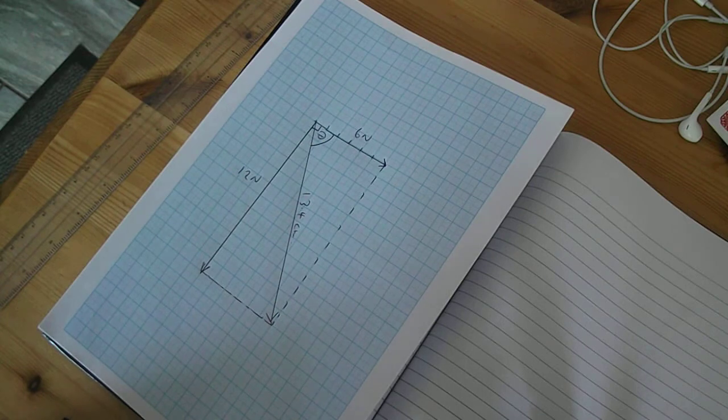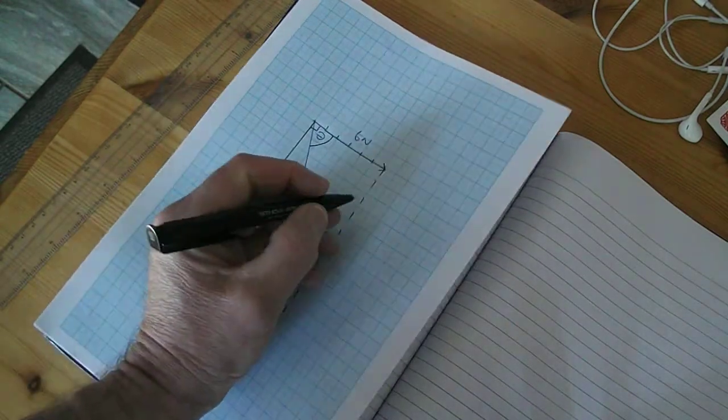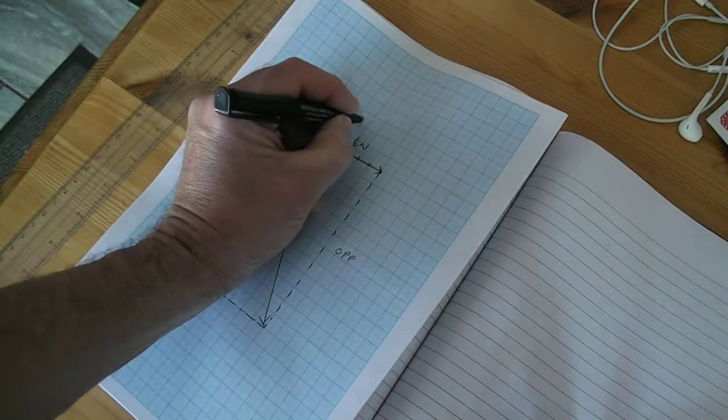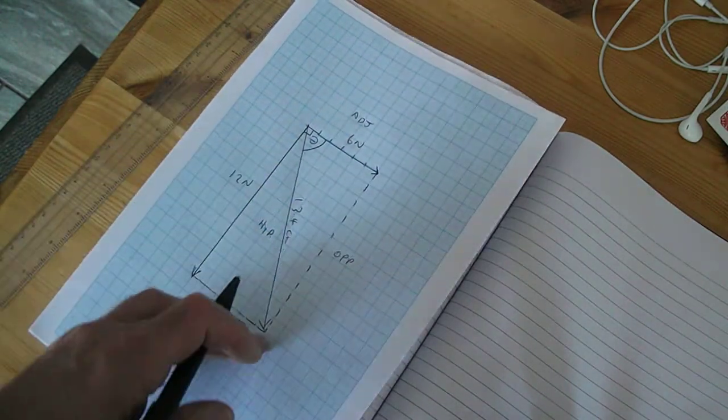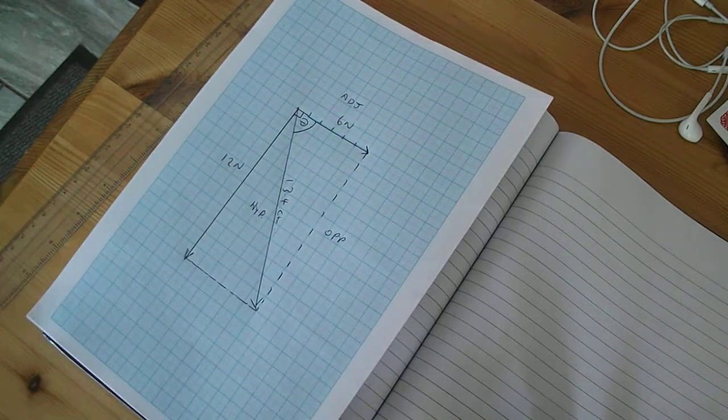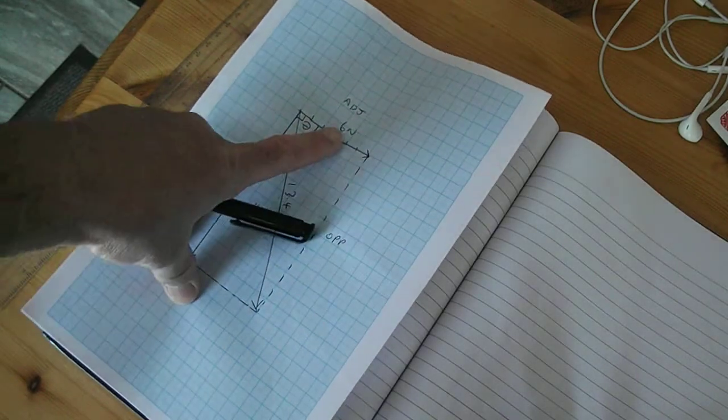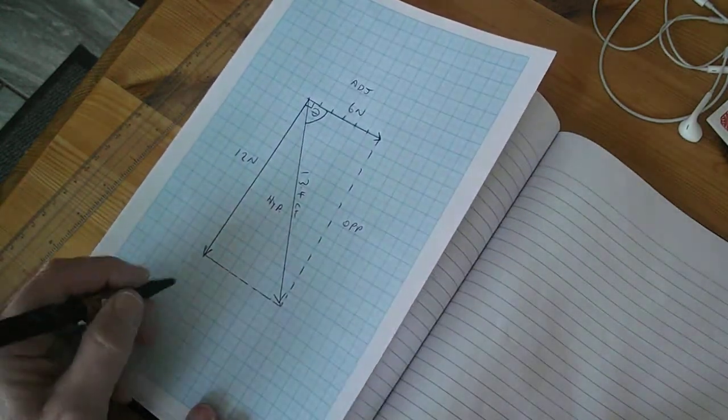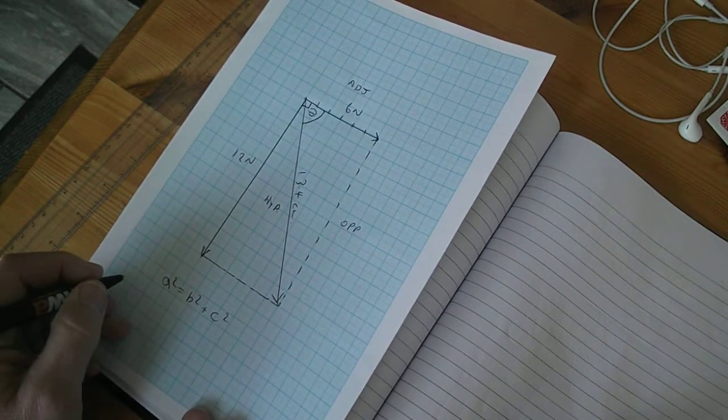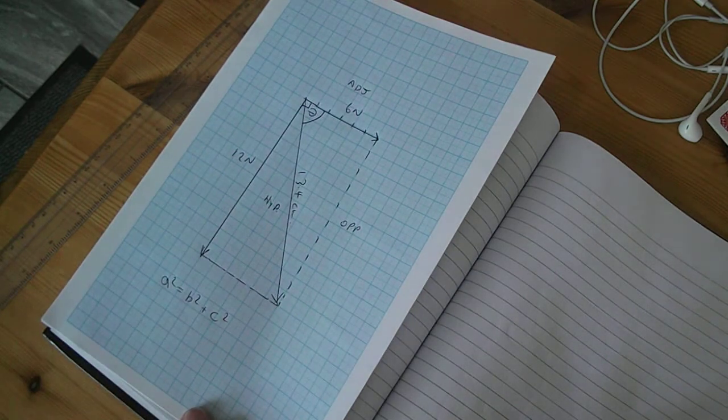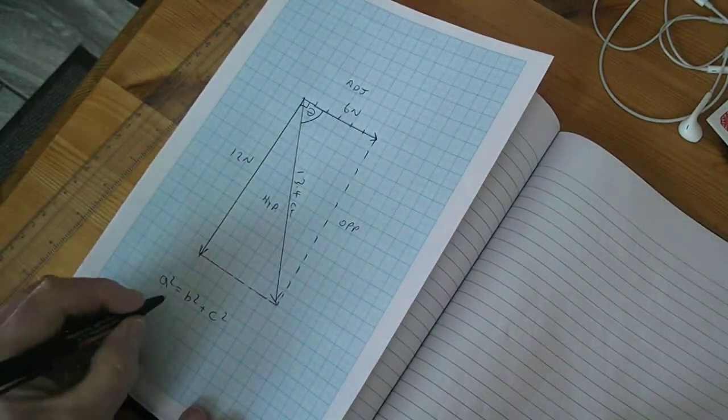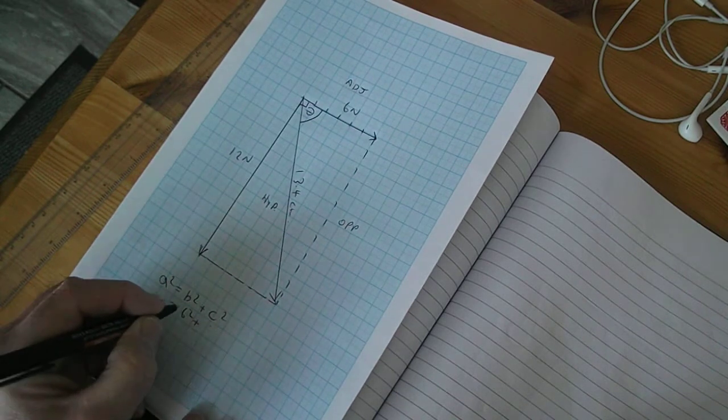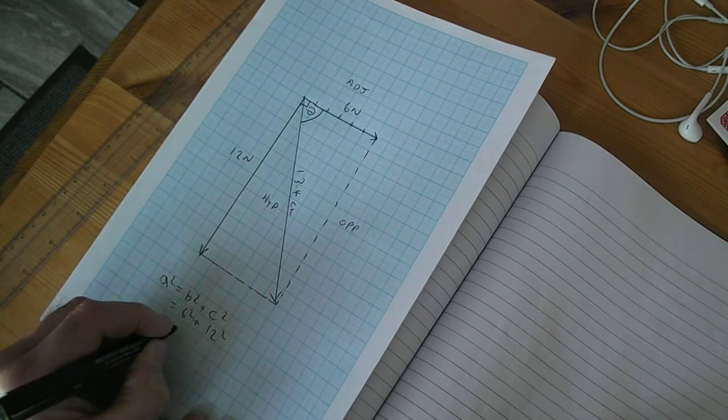That was the angle, this would be the opposite side, this is always the hypotenuse, and that one's going to be the adjacent side. So from Pythagoras we know that 12 and 6 are going to be our b and c. We could say that a squared equals b squared plus c squared. So a squared, which is the hypotenuse, is 6 squared plus 12 squared, equals 36 plus 144.